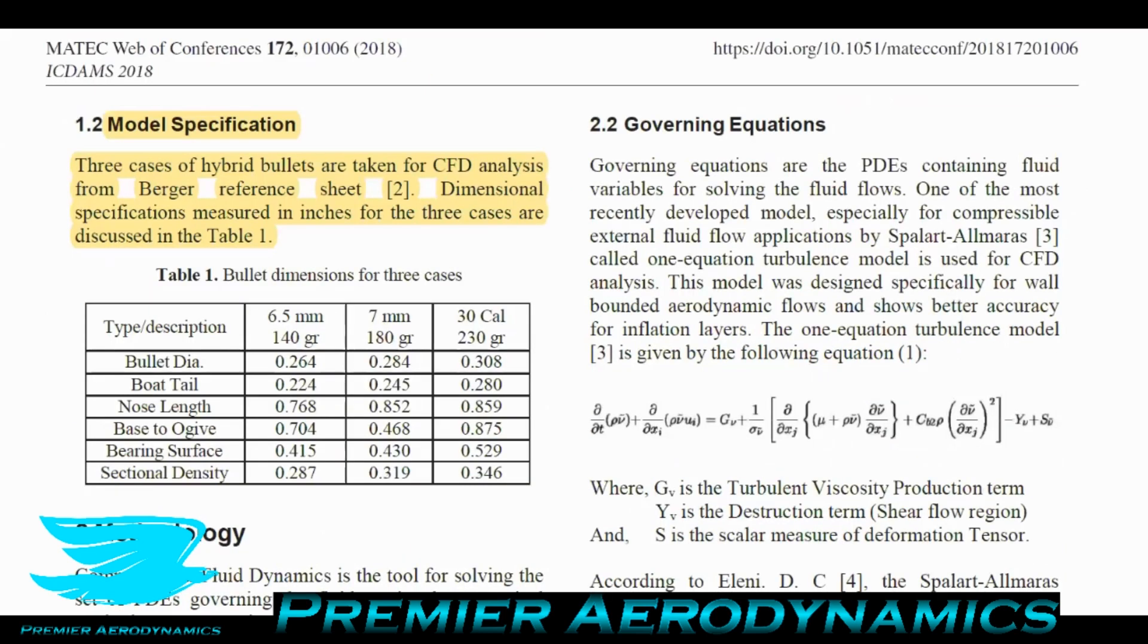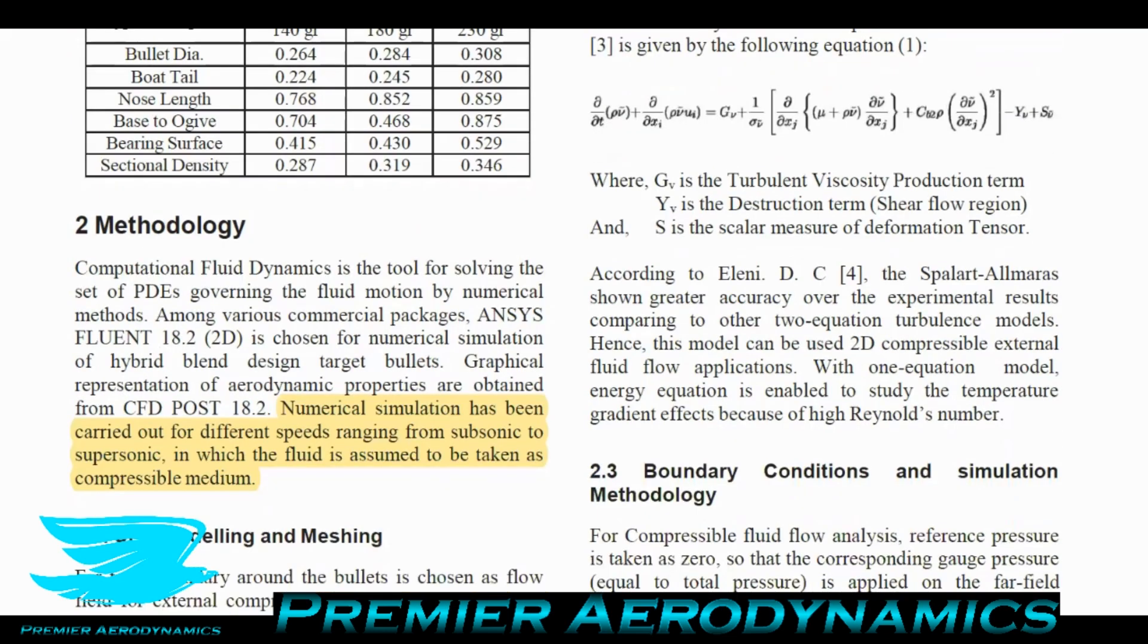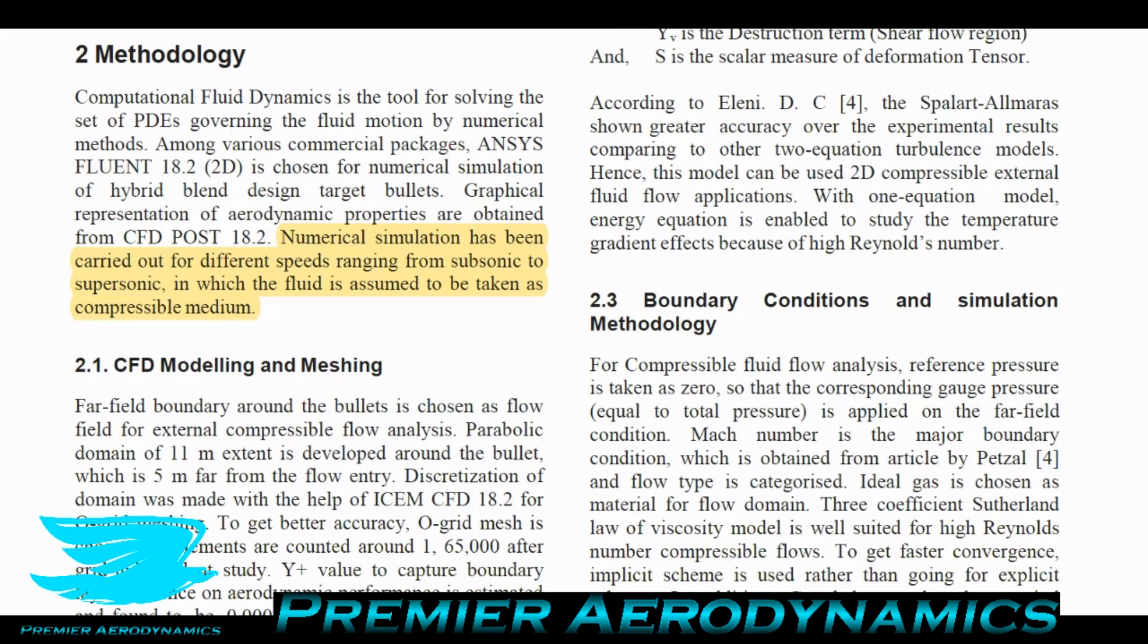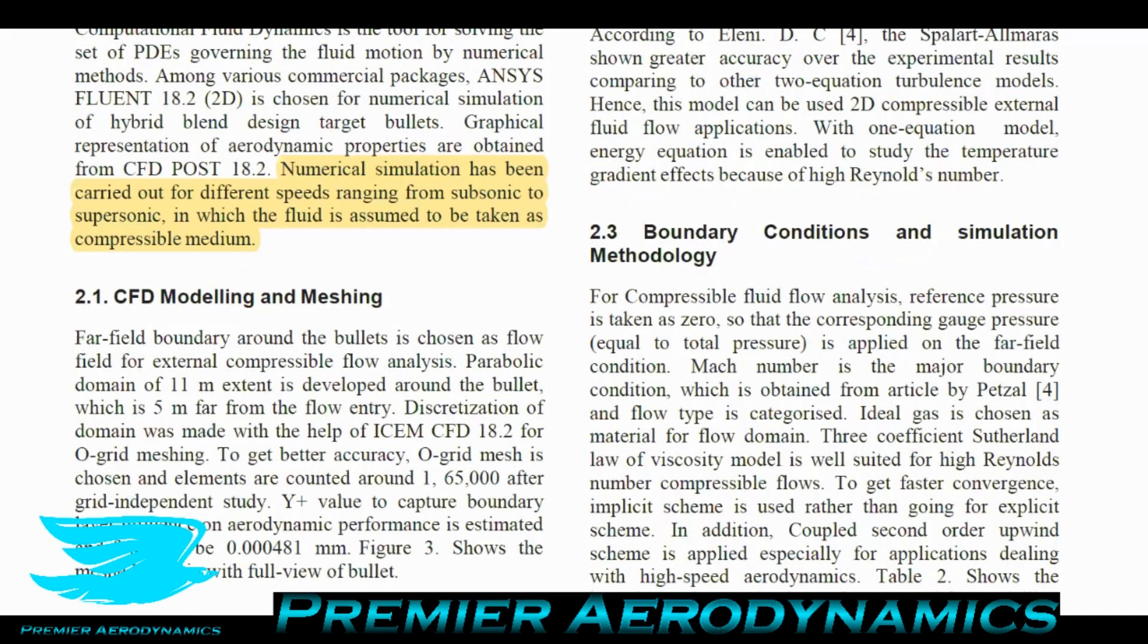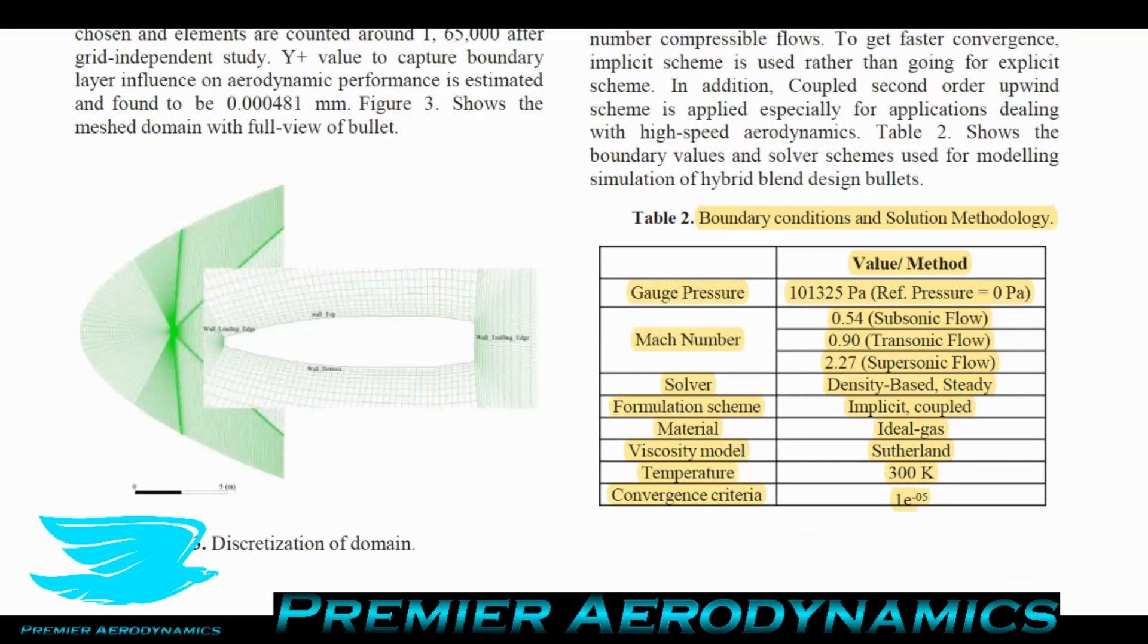Three cases of hybrid bullets are taken into CFD analysis with dimensional specifics in table one: 140 gram, 180 gram and 230 gram bullets with different densities and slightly different profiles. Numerical simulation was carried out for different speeds ranging from subsonic to supersonic, where the fluid is assumed to be compressible. Even at subsonic speeds, because it's well above Mach 0.3, air can be considered compressible. Below 0.3 Mach number we assume incompressible flow.